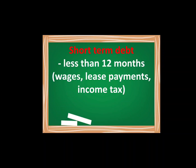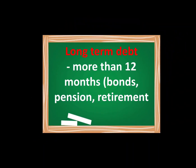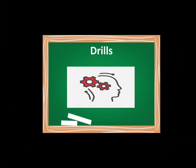Short-term debt is a debt of less than 12 months. Examples include wages, lease payments, and income tax. Long-term debt, on the other hand, is more than 12 months. Examples include bonds, pension, and retirement.